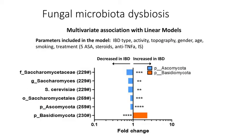After adjustment for potential confounding factors, an increase of Basidiomycota, a decrease of Ascomycota, and a decrease of Saccharomyces were still associated with IBD.